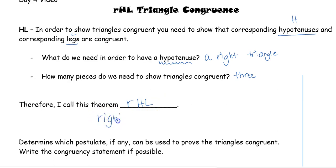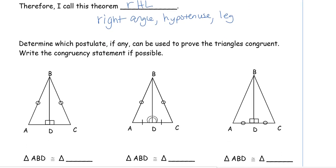So again, the R is from the right angle. The H is from the hypotenuse. And the L comes from the leg. And I find this less confusing because now we do have the three pieces of information that we continue to reference that we need in order to prove triangles congruent.